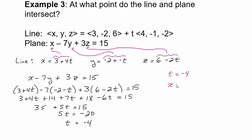So when t equals negative 4, x is going to equal 3 plus 4 times negative 4, so that's negative 16. I'll just write it out over here, 3.